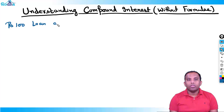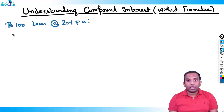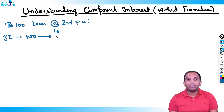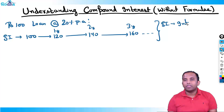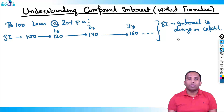I've taken a rupees 100 loan at 20% per annum — we discussed this in the first video. If it is at SI, my capital is 100 rupees. After the first year, if I don't pay the bank, I need to pay 120 rupees — that's 20 rupees interest. After the second year, 140; after the third year, 160, and so on. Interest is fixed. In SI, interest is always on capital.